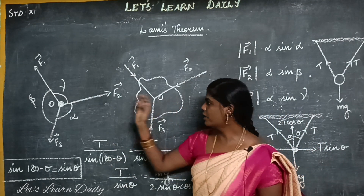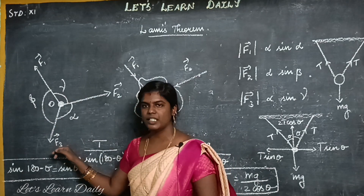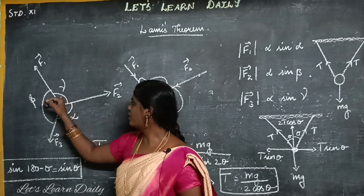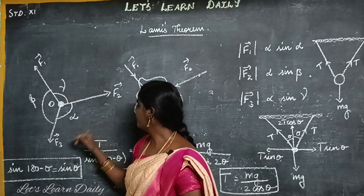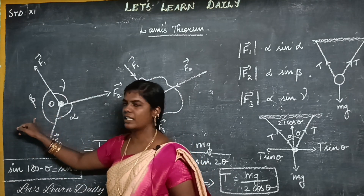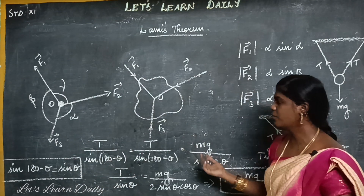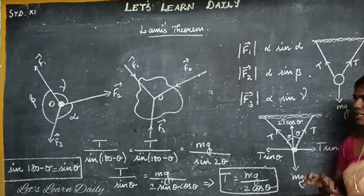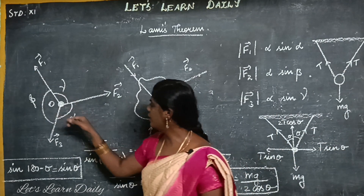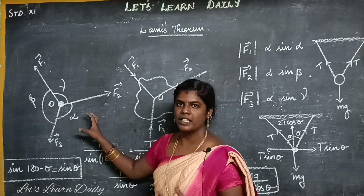Now, you can represent the forces as S1, S2, and S3. S3 is at angle alpha, and S3 is at angle beta. You can apply alpha, beta, gamma. The opposite force to S1 is between S2 and S3. So, the opposite angle in Lami's Theorem — we have to relate each force to its opposite angle.